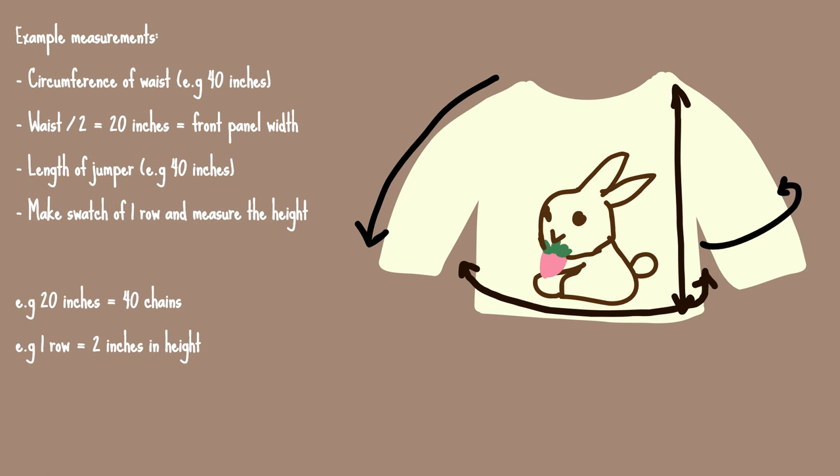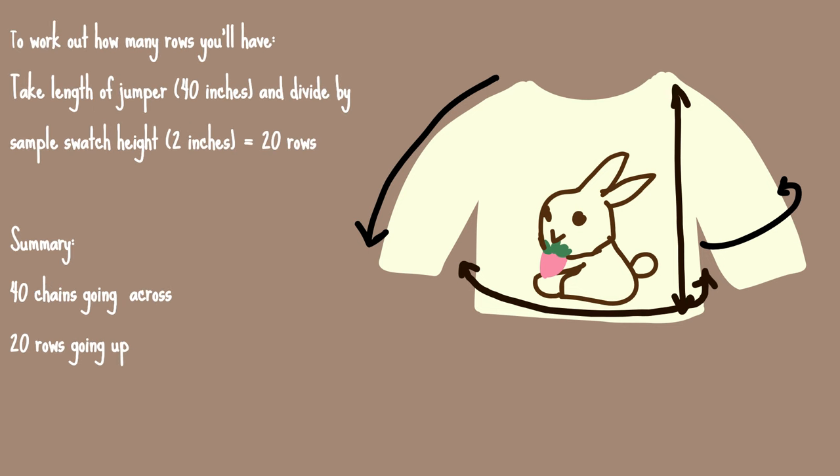Let's say 20 inches for the front panel equals 40 chains. For the height of the jumper, make a sample swatch using the yarn of your choice — do one row of your chosen stitch. In this tutorial I'm doing half double crochet, so do a row of half double crochet and measure the height of that row. For example, a row of half double crochet could be 2 inches in height. Take the jumper length — 40 inches — and divide it by the row height of 2 inches, giving you 20 rows total.